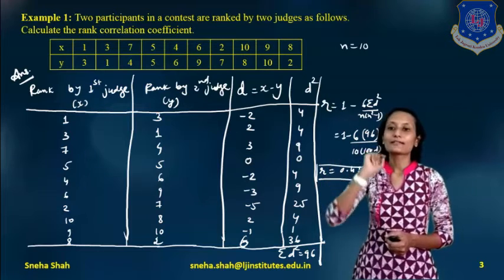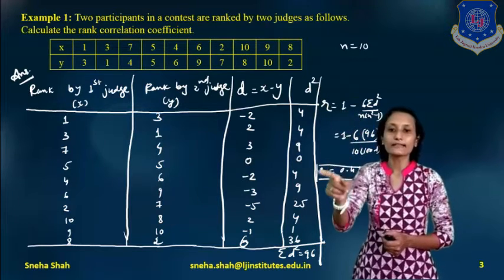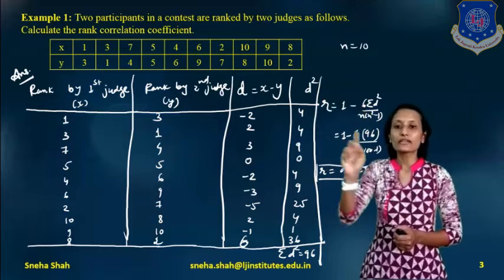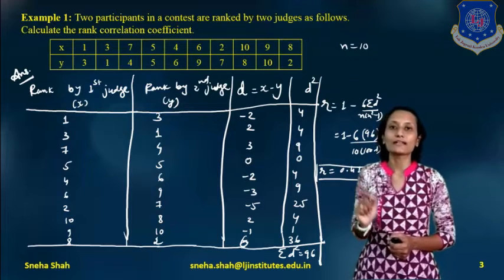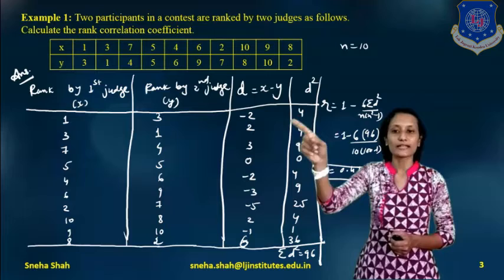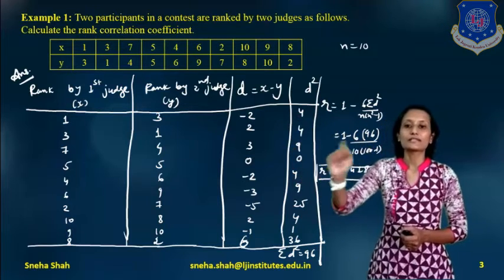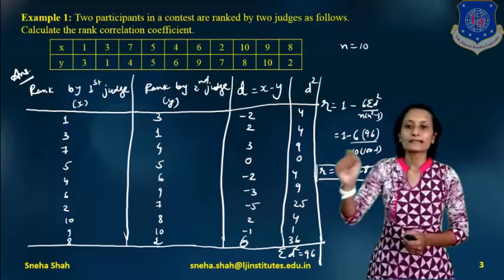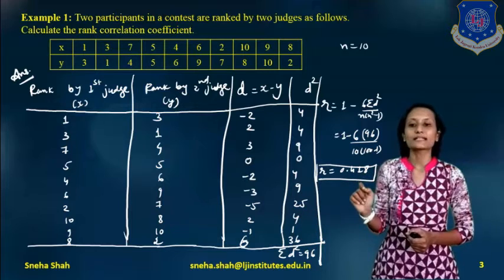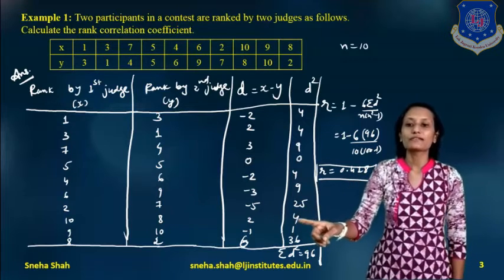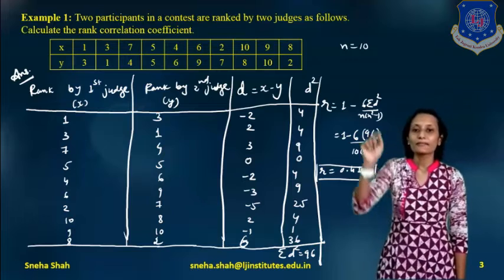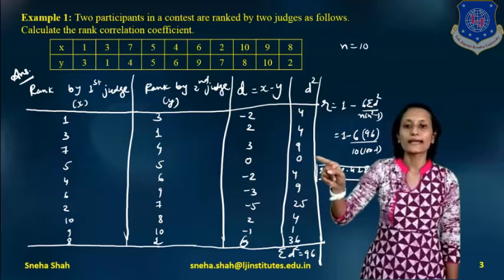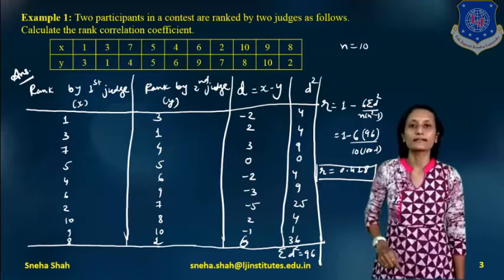Writing the rank given by the first judge as x and the rank given by the second judge as y, we take the difference: 1 minus 3 equals minus 2; 3 minus 1 equals 2; 7 minus 4 equals 3; 5 minus 5 equals 0; 4 minus 6 equals minus 2; 6 minus 9 equals minus 3; 2 minus 7 equals minus 5. Likewise we find all other terms. Then we take d-squared: minus 2 squared equals 4; 4; 9; 0, and so on.